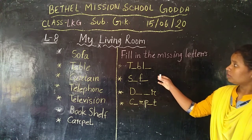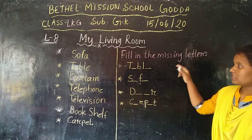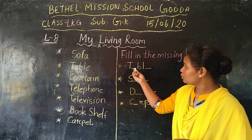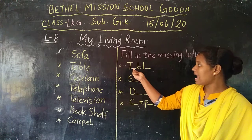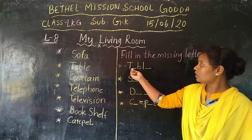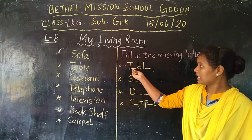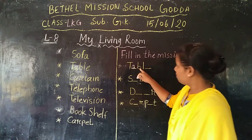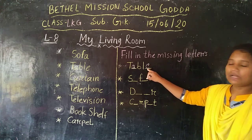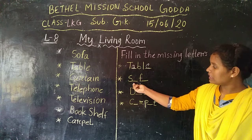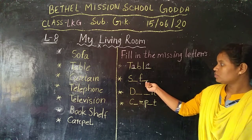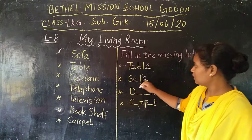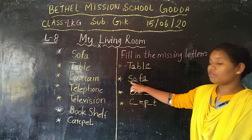Here I have given you a problem — that is, fill in the missing letters. The words are given and some letters are missing, so you have to fill them up. First one is T-blank-B-L-E. The answer is T-A-B-L-E. The missing letters were O and A, so the word is completed as TABLE.